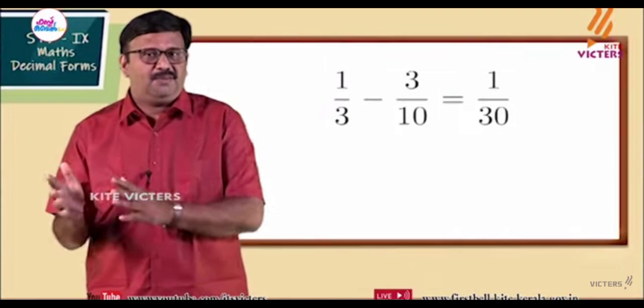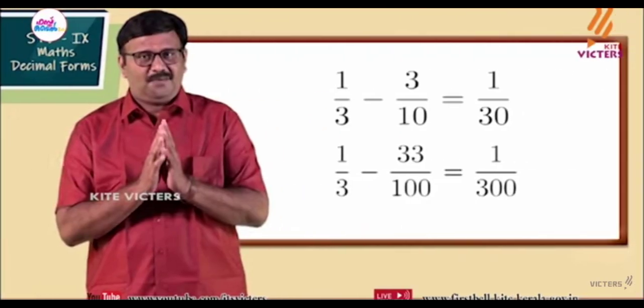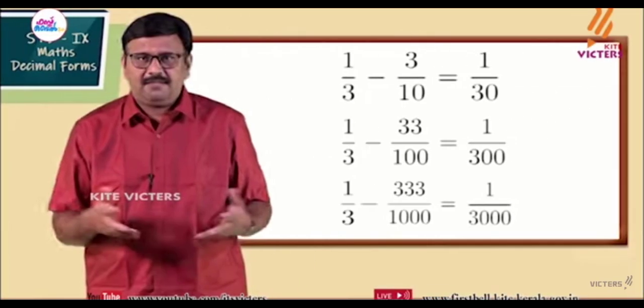First equation. 1 by 3 minus 33 by 100. We have 3 by 10, 1 by 30, 1 by 300. 1 by 3 is equal to 33 by 100.